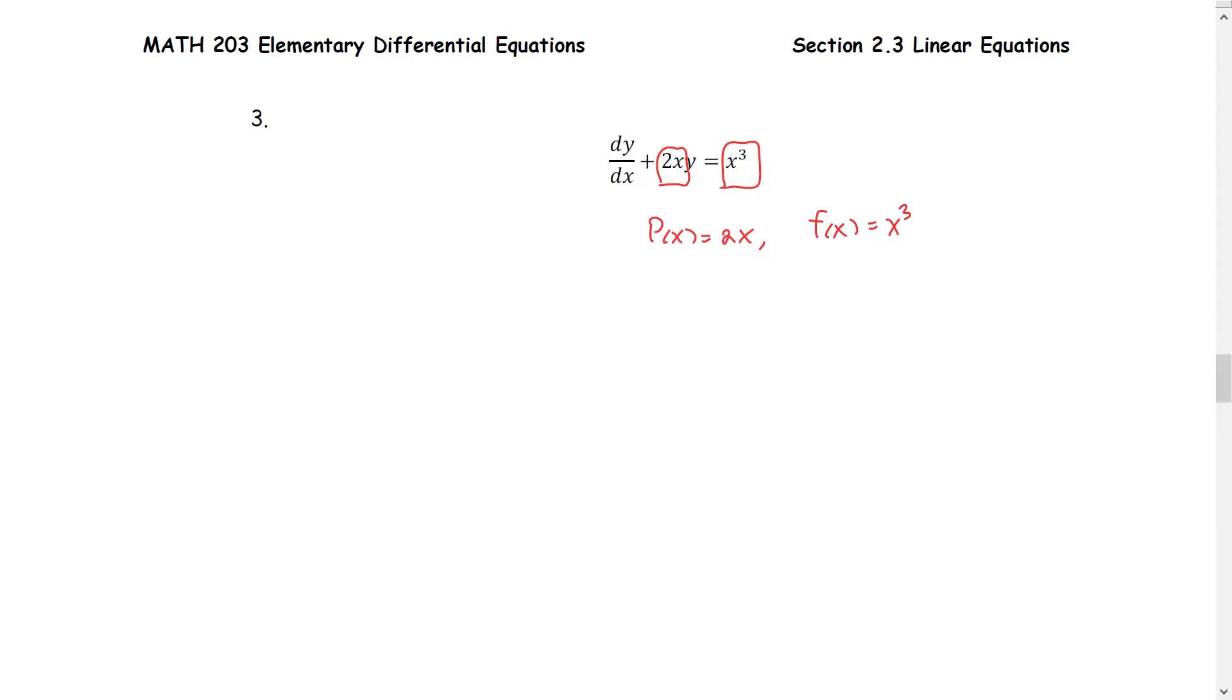Let me check with you guys. So what do you get for the mu or the integrating factor? This problem is already in the standard form. That's why we get the P(x) as 2x and the f(x) as x to the third power.